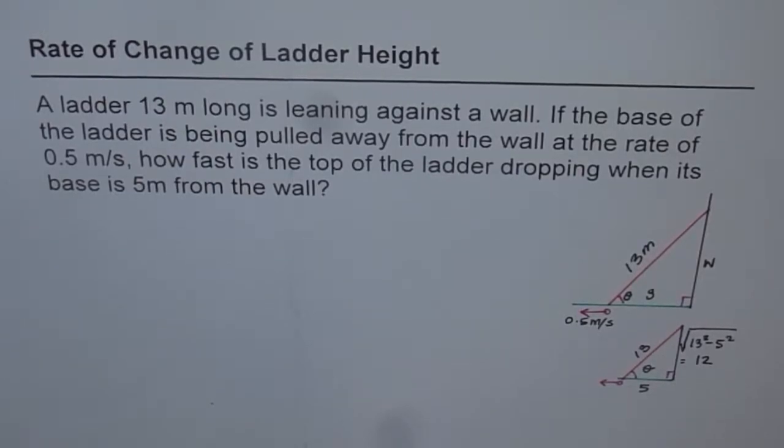Rate of change of ladder height. A ladder 13 meters long is leaning against a wall. If the base of the ladder is being pulled away from the wall at the rate of 0.5 meters per second, how fast is the top of the ladder dropping when its base is 5 meters from the wall?